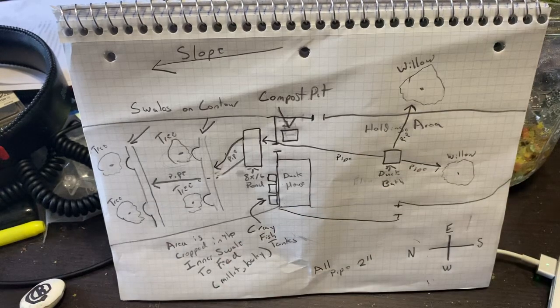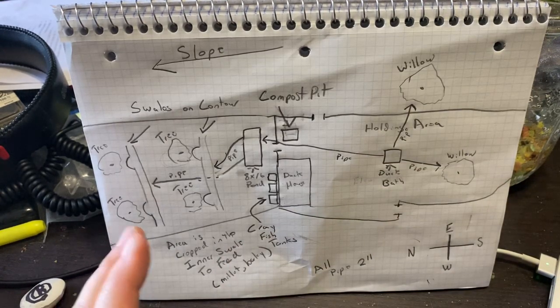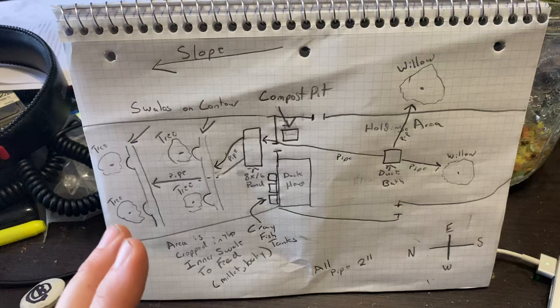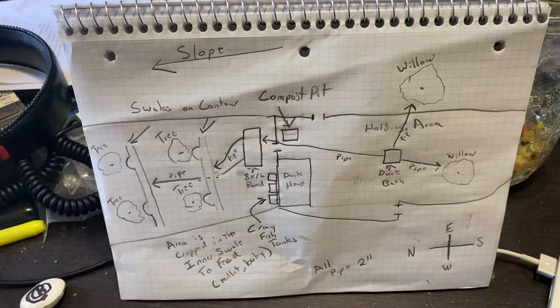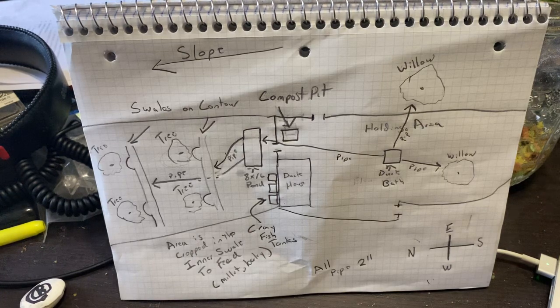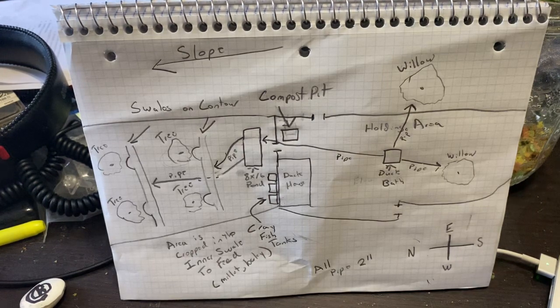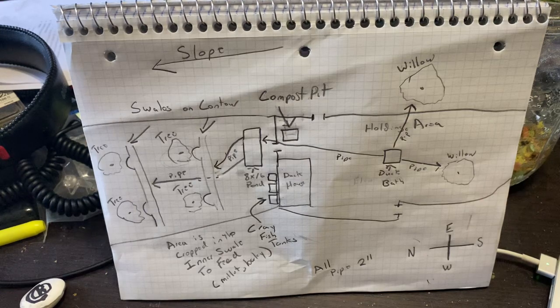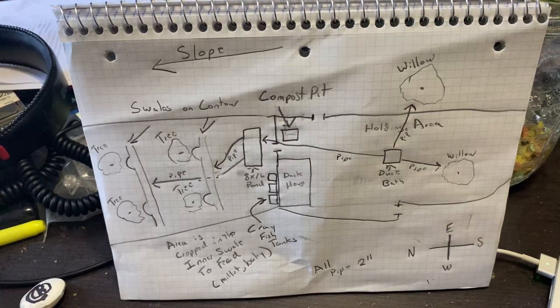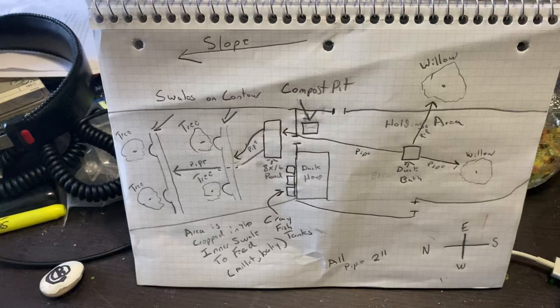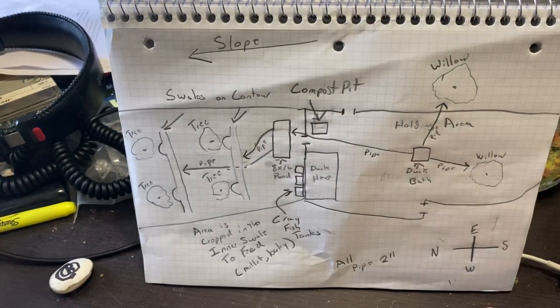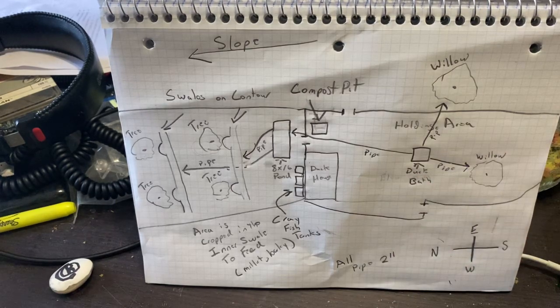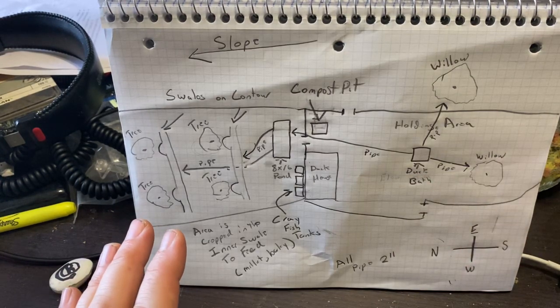So this is going to be a duck feed and composting system. It's also going to grow trees, grow food for other fish and aquatic systems, grow crayfish for us and other fish. This is one of the more complex function stacking systems I've ever built.